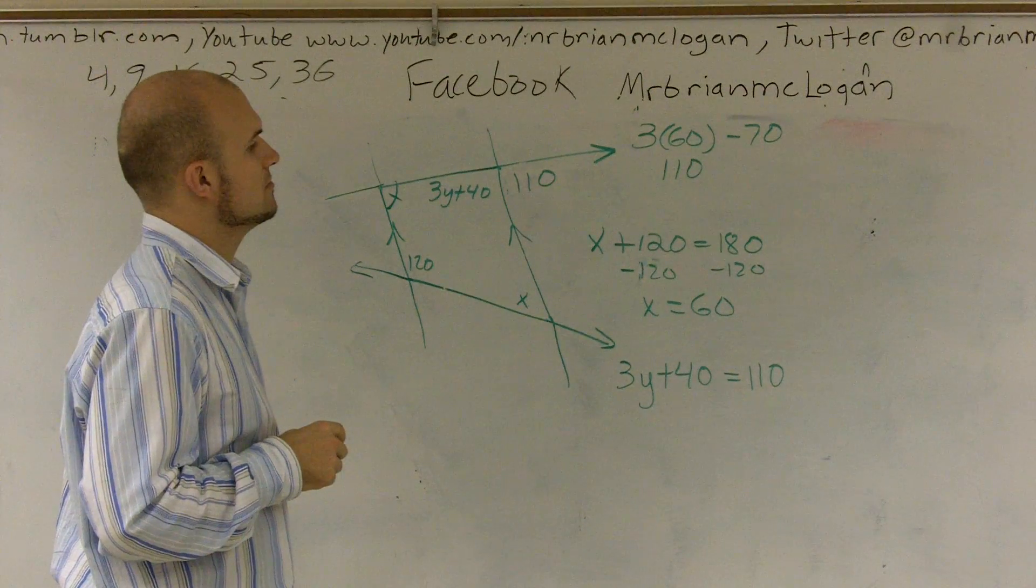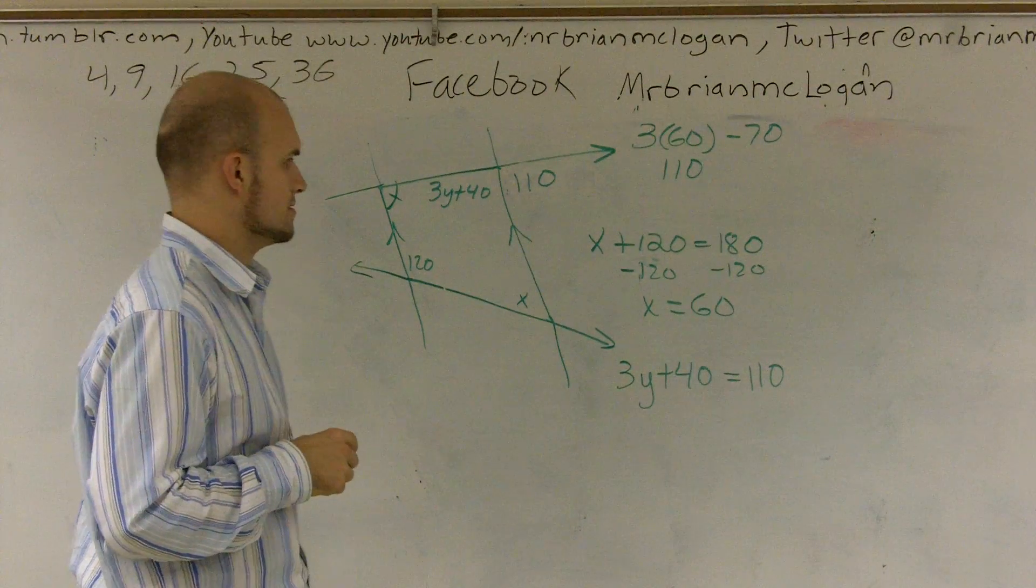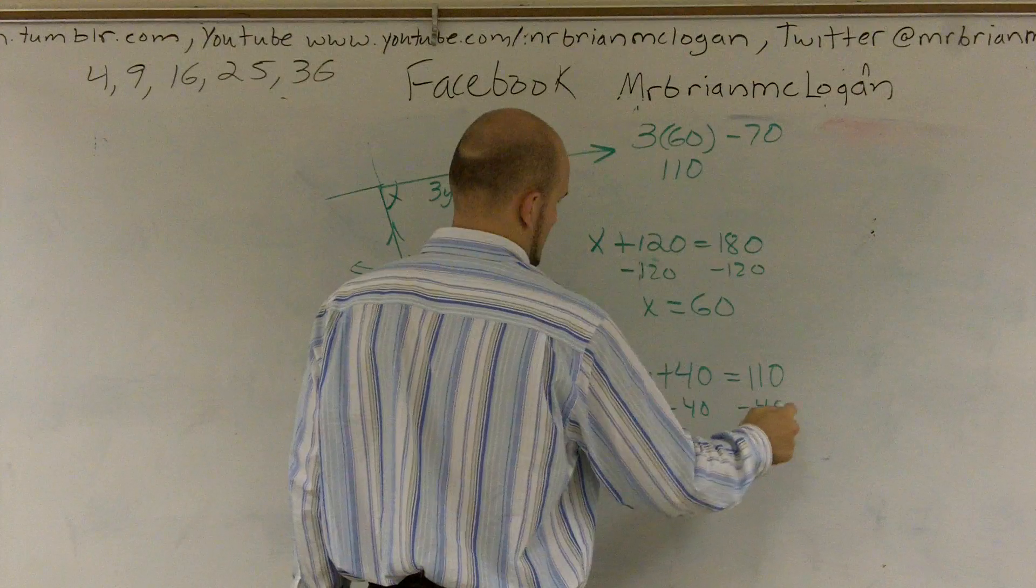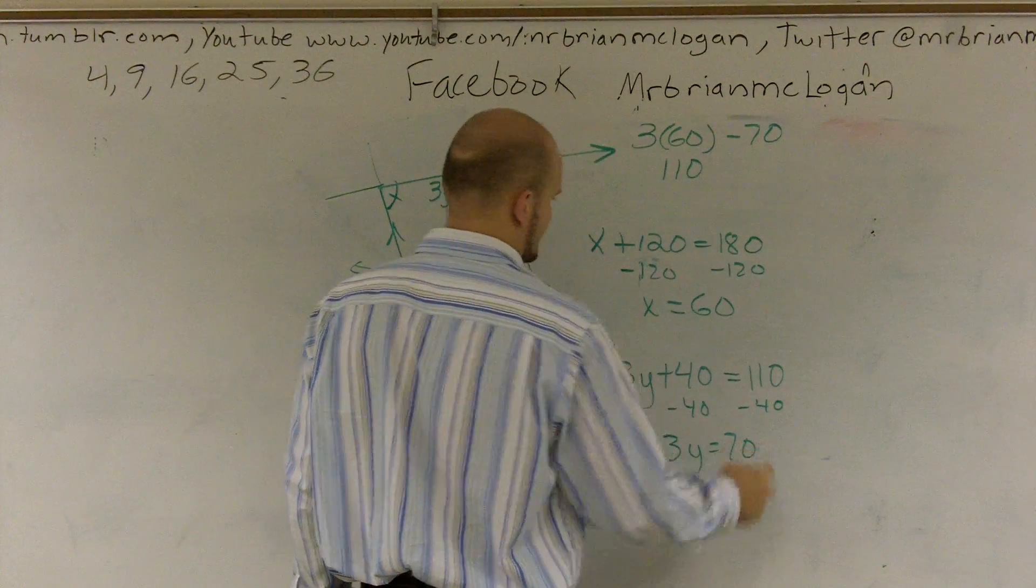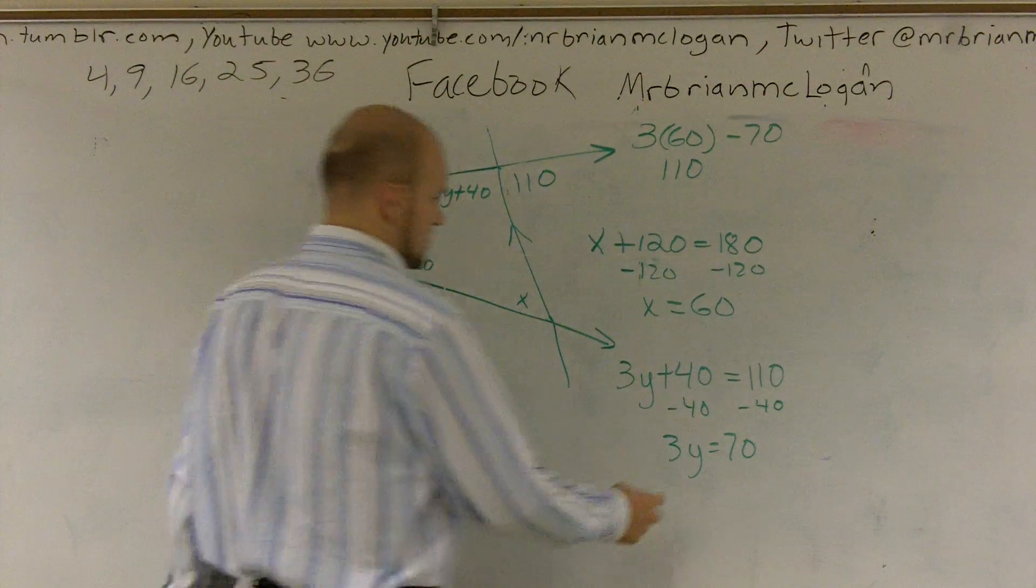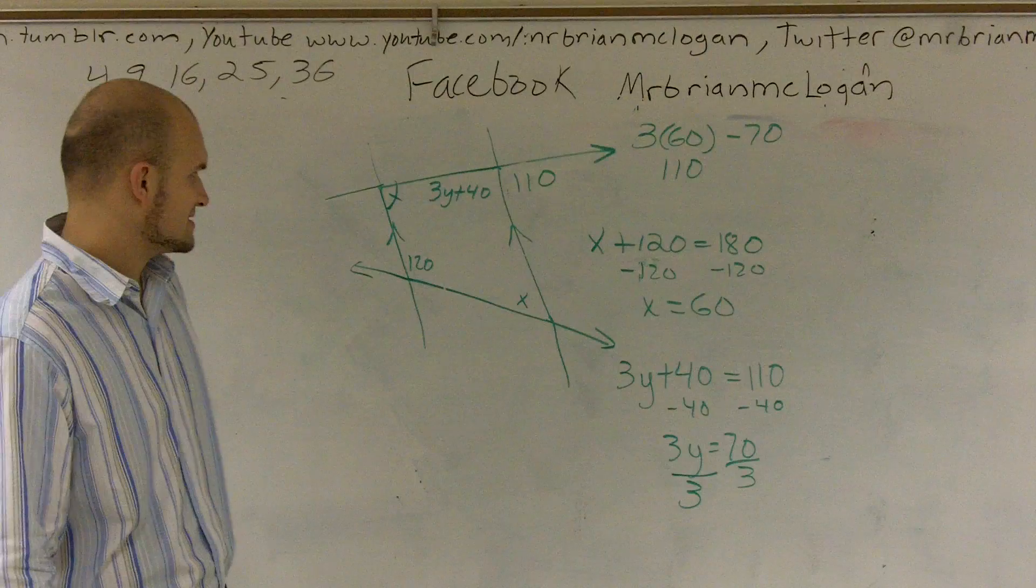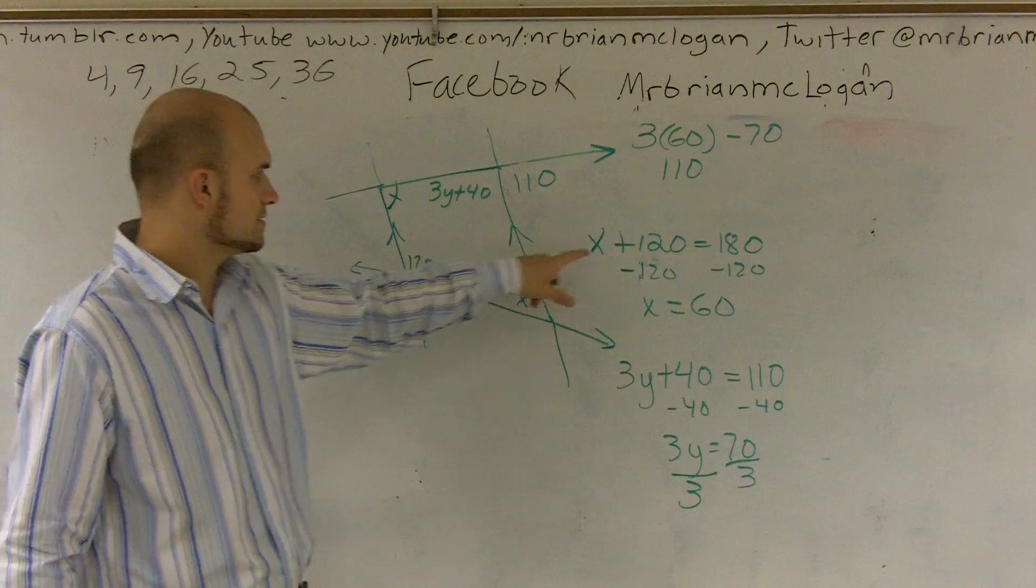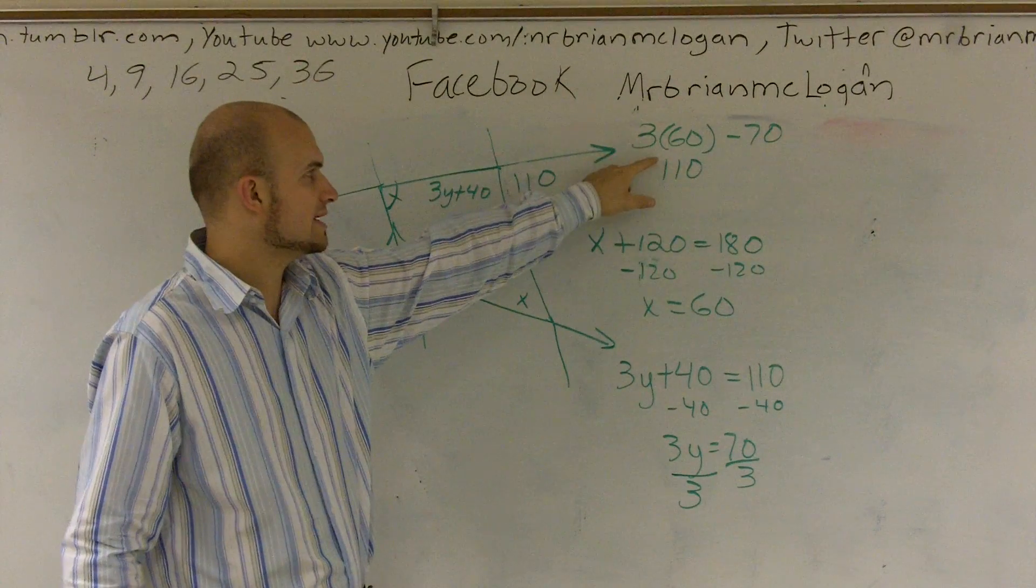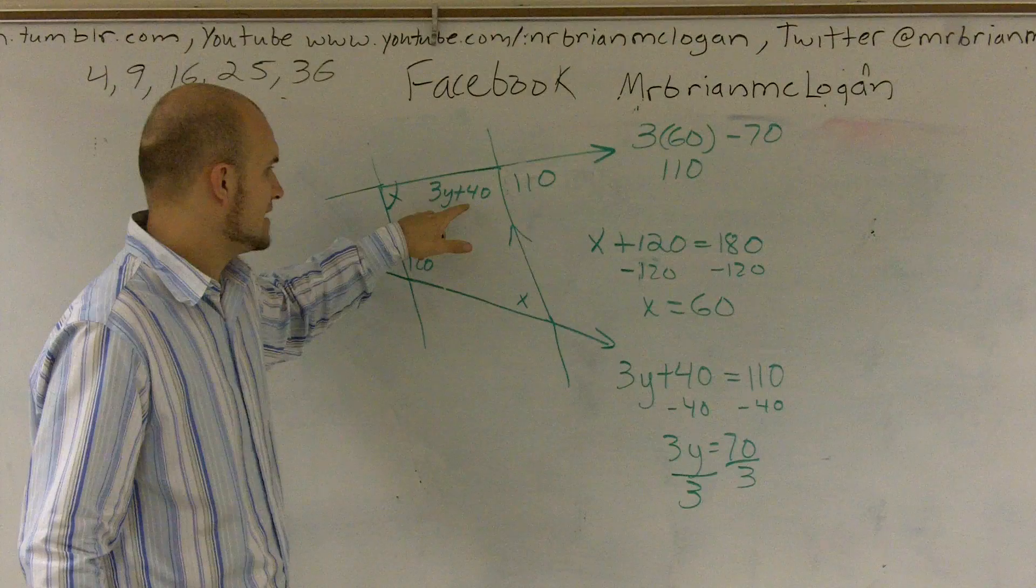180. And I'm just seeing I'm going to get a decimal here. I'm just double checking my work. I'm not seeing an explicit mistake right now. These two add up to 180, 60. Plug 60 into there. 3 times 60 is 180. 180 minus 70 is 110. 110 and this add up to 180.